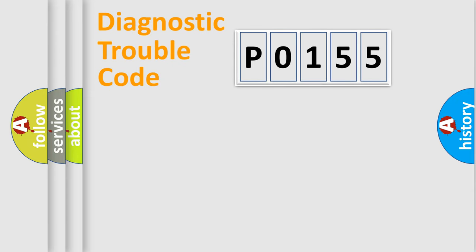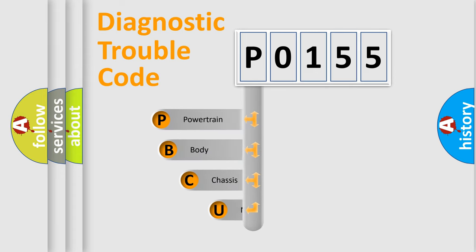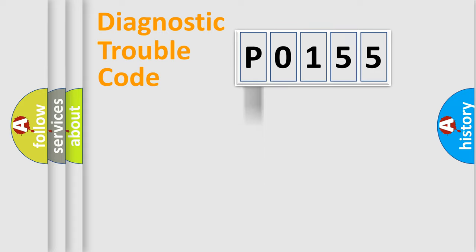Let's do this. First, let's look at the history of diagnostic fault code composition according to the OBD2 protocol, which is unified for all automakers since 2000. We divide the electric system of the automobile into four basic units: Powertrain, Body, Chassis, and Network.